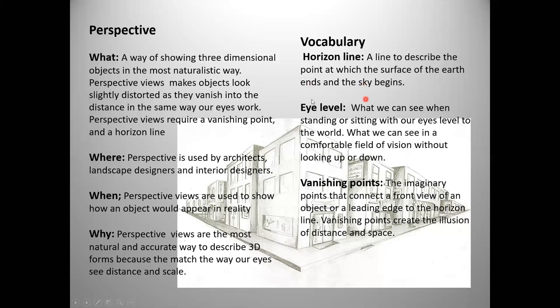Move on to the next vocabulary here, which is eye level. So what does eye level mean? Well, eye level means what we can see when standing or sitting with our eyes level to the world. What we can see in a comfortable field of vision without looking up or down. So eye level is just you naturally just looking straight ahead. And whatever's straight in front of you, that's eye level, whatever's at the same level as your eye. If you need to look further up, you need to move your head up, that's above eye level. If you need to look towards the floor, and you're sitting down, that's going to be below eye level.